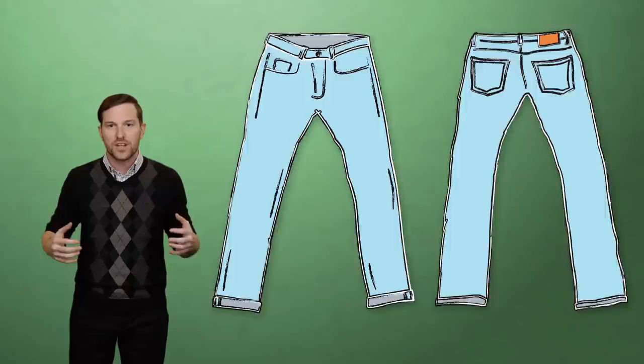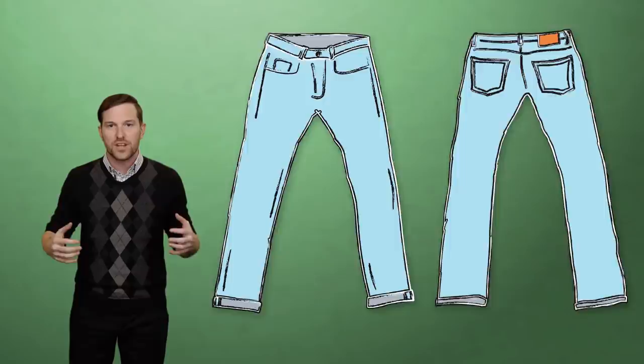The more you wear a pair, the more broken in they become. And you'll see the appearance of fade patterns. You know, whiskers on the front, honeycomb patterns behind the knees, and so on. And here's where it gets... Wait, what show is this? Not all jeans are created equally, so let's divide them into two rough categories. Washed and raw.